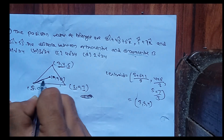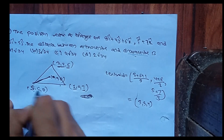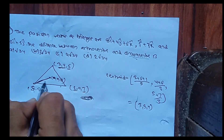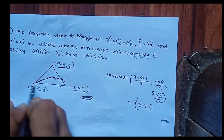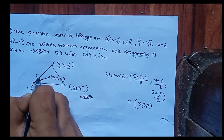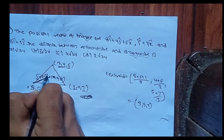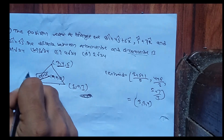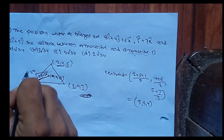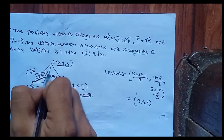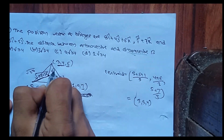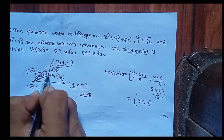The distance works out as sqrt(25 + 25) = sqrt(50). This gives us the distance between the orthocentre and circumcentre for this triangle.